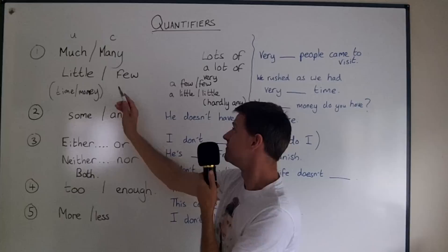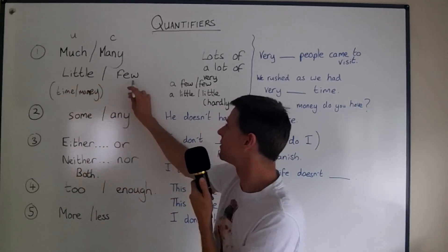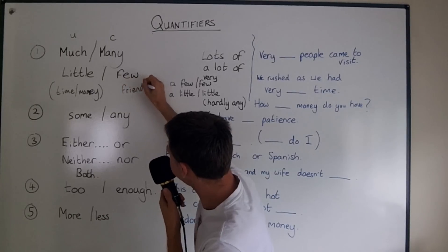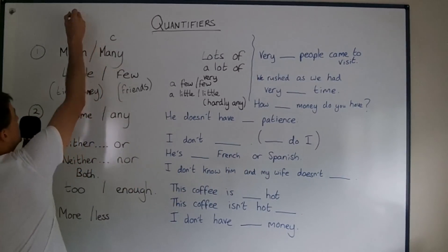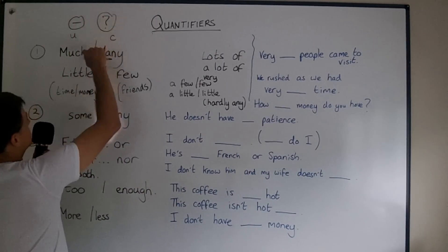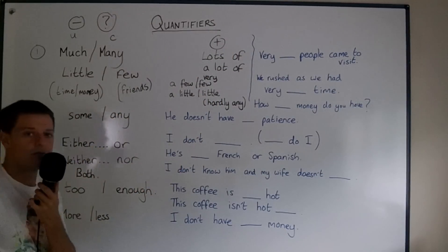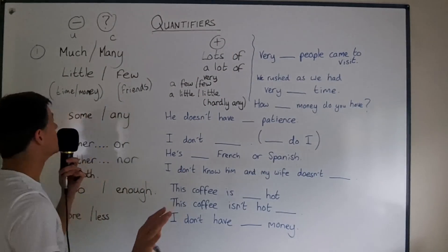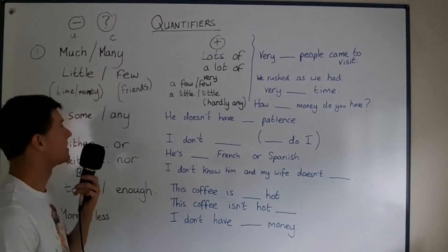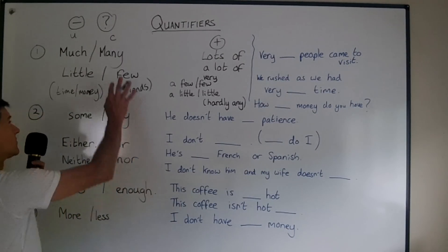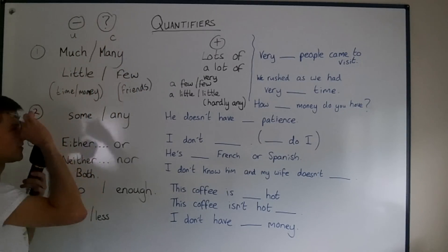I have very few friends, I have very little time. So friends would be a good example of countable. We usually use much and many for negatives and questions, and we usually use lots of or a lot of for positives. But not always — if you start the sentence with 'many people,' 'many academics,' 'many scientists,' it's very common to start with many in a positive sentence.